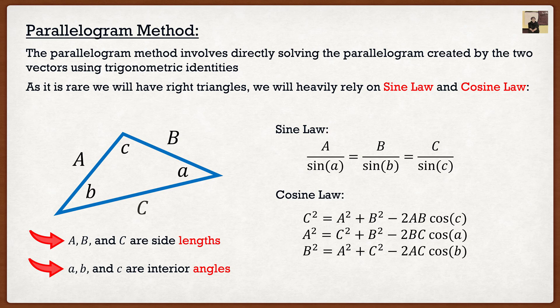We typically use cosine law to find side lengths — the key giveaway is that in the equations, the side length is equal to something. In these problems we solve for our resultant force C using cosine law, and then solve for the angle of C using sine law. When we go through the procedure it will be very apparent how this works.